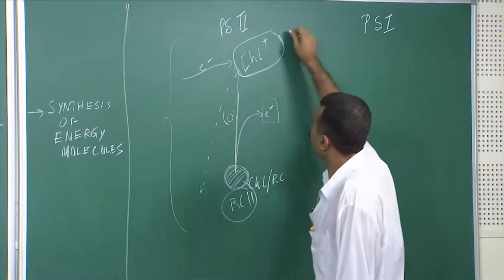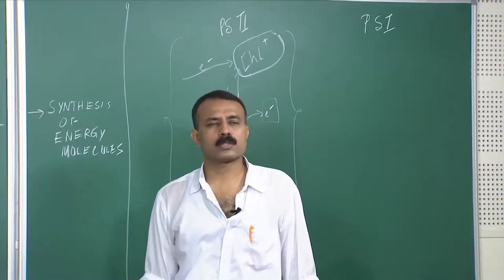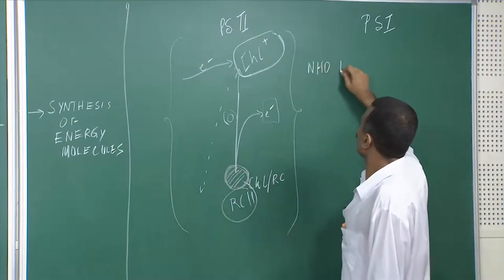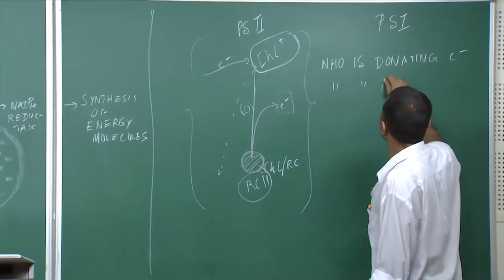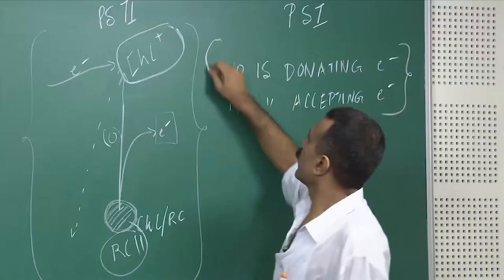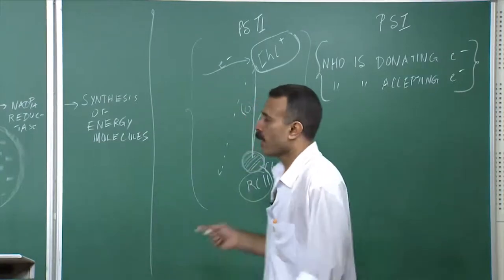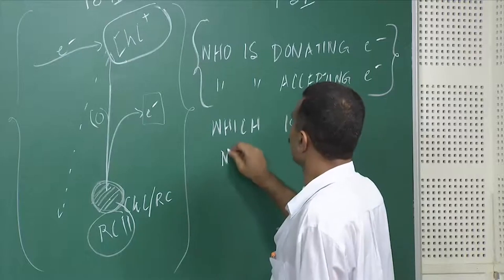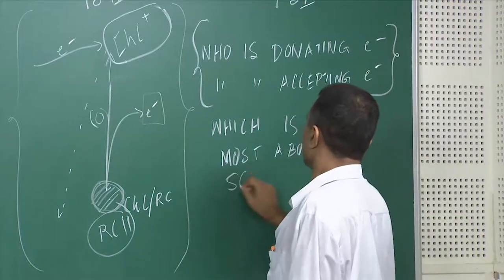As long as you understand this basic phenomenon of accepting an electron — getting oxidized or getting reduced — the whole of photo system one or two is all about who is donating electrons and who is accepting electrons. As a matter of fact, our whole story about evolution is about who is donating electrons and who is accepting electrons, and the third question is: which is the most abundant source of electrons?